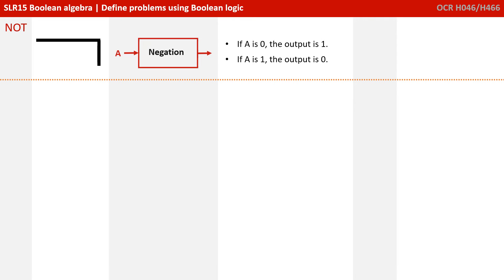So there are four pieces of Boolean logic which you specifically need to know about for the exam. Others do exist. The first is NOT, and in the second column here, you see the symbol which OCR will use to describe NOT. NOT is negation. It basically reverses the input. So if A is 0, the output is 1. And if A is 1, the output is 0.